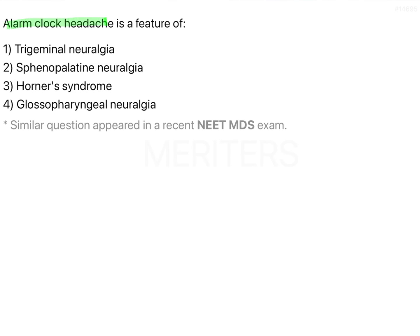Alarm clock headache is a feature of which condition? The options are trigeminal neuralgia, sphenopalatine neuralgia, Horner's syndrome, and glossopharyngeal neuralgia. Let's look at the type of pain in each of them.